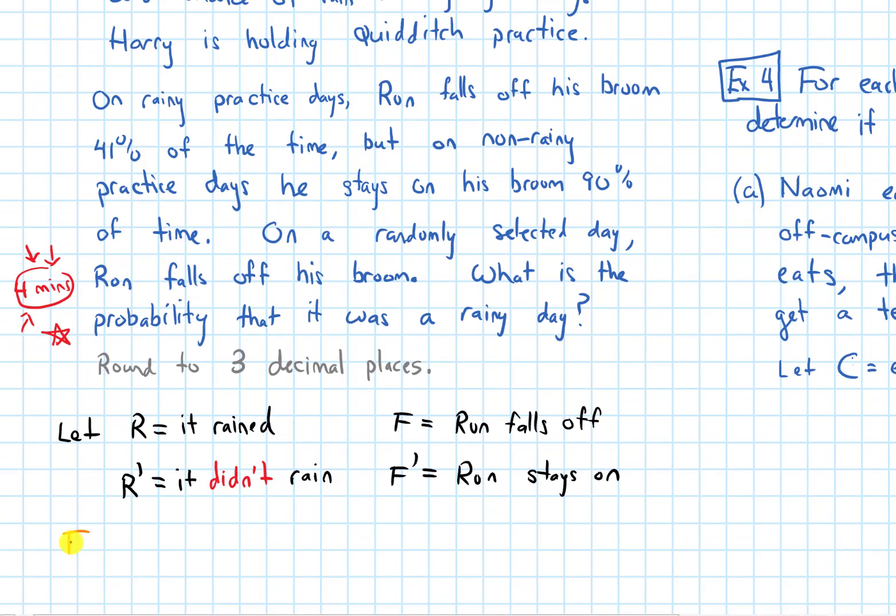We are trying to find the probability: what's the probability that it was a rainy day? But it already tells us that Ron falls off his broom, which means this is a conditional probability. It wants the probability that it rained, given that Ron falls off. Using our labeling, this is the probability of R, given that F occurs.